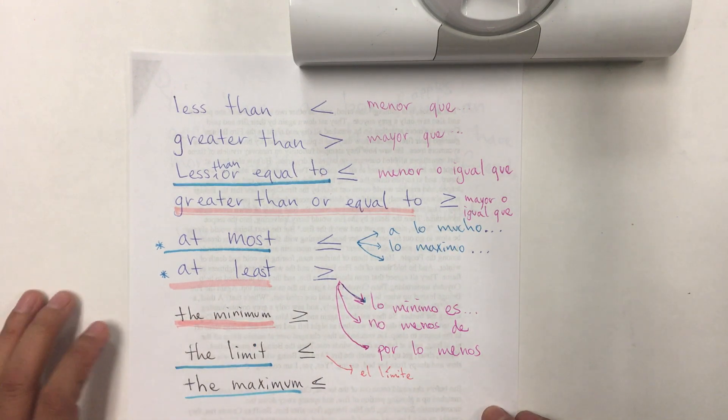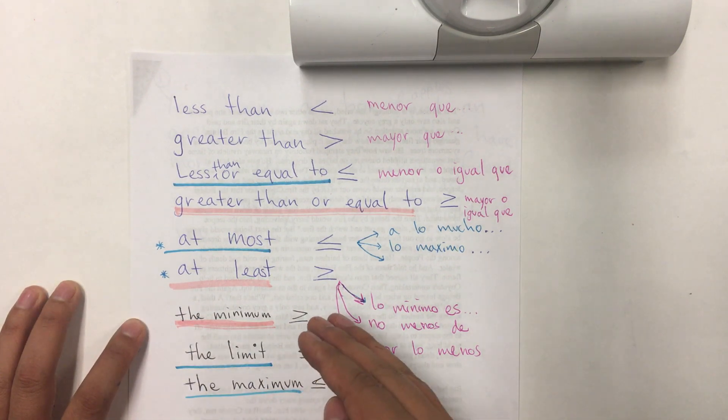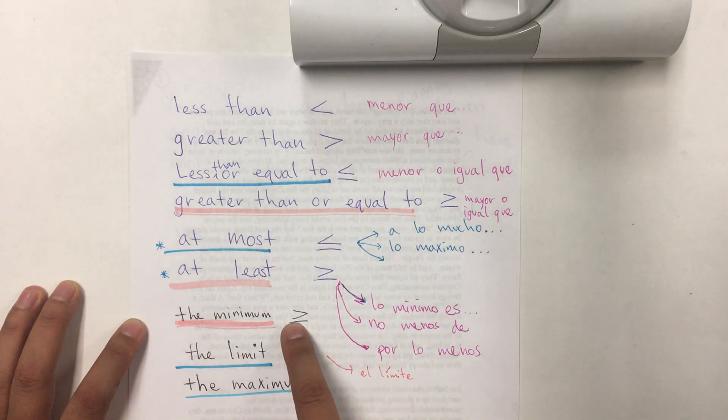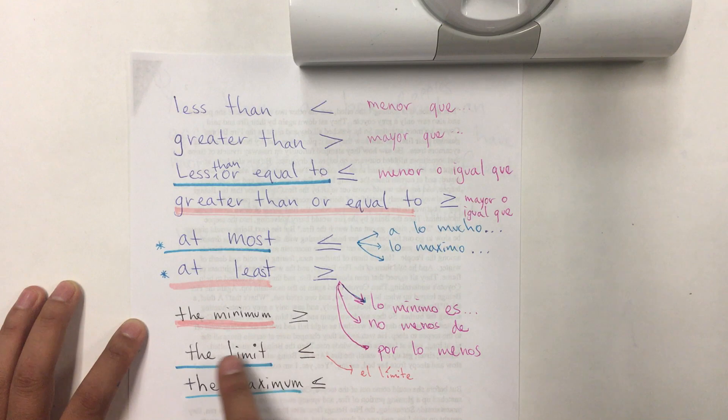And the minimum, the minimum is, it means that I want that or more. The minimum is $20 per hour, for example. That means I want more than $20 or at least that much. The minimum. So, the limit.